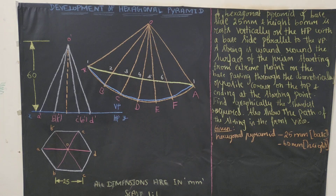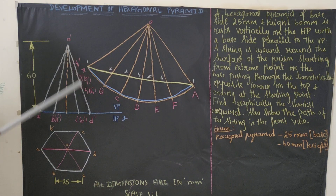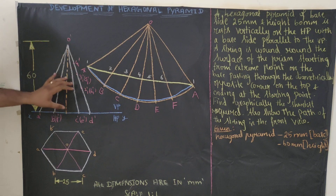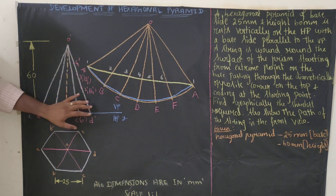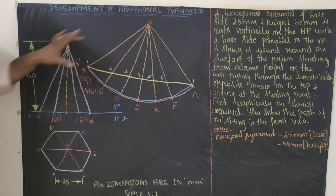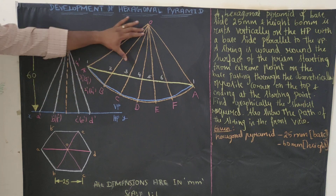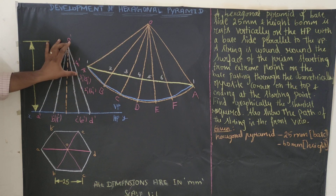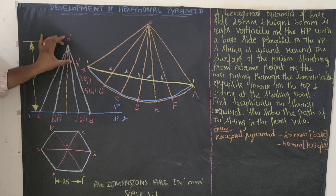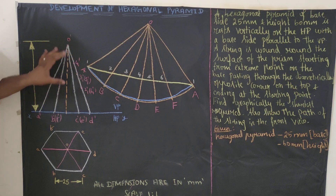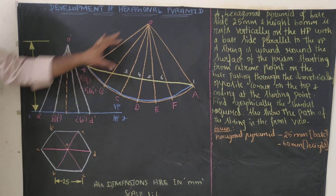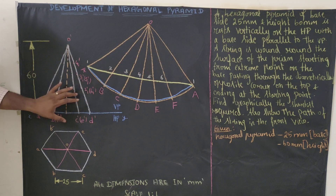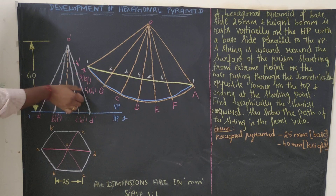This is a true slant edge, so always mark 'true slant edge' here and take the measurements to the respective slant edges. Measure from O to point 1 and mark it as 1 dash on the corresponding slant edge in the front view. Measure O to 2, O to 3, O to 4, O to 5, O to 6 and mark each distance on the respective slant edges in the front view.